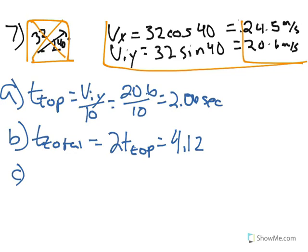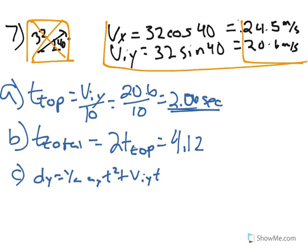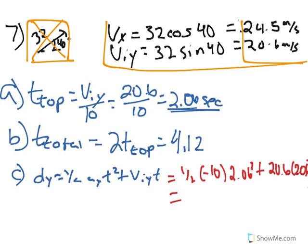For C, we want to find the maximum height using the dy formula: dy equals one half ay t squared plus viy t. We do have an initial velocity in the y — it's 20.6. We use the time to the top, 2.06, since that's when the object is at its highest point. Plugging in: one half times negative 10 times 2.06 squared plus 20.6 times 2.06, and dy equals 21.15 meters. It is critical that the negative 10 is negative.